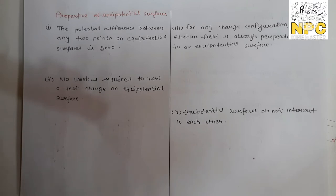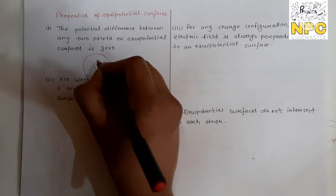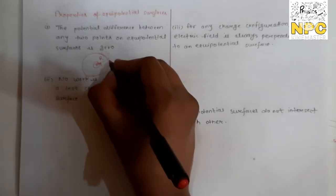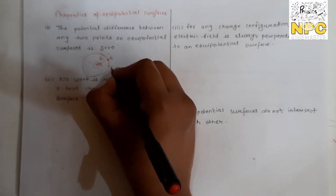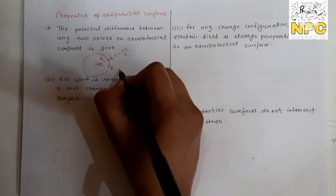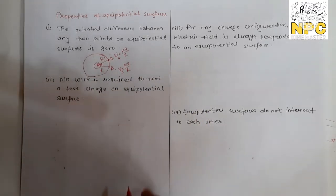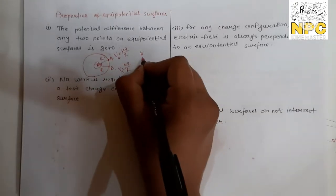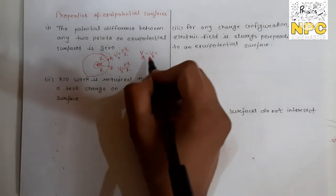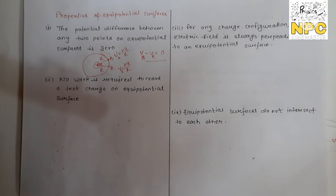Property 1: The potential difference between any two points on an equipotential surface is zero. Let's take the example of a point charge. The equipotential surface is a sphere of radius R. If you consider two points A and B on this surface, the potential at A is VA = kQ/R and at B is VB = kQ/R — because the radius is the same. So VB − VA = 0, which means the potential difference between any two points on the equipotential surface is zero.